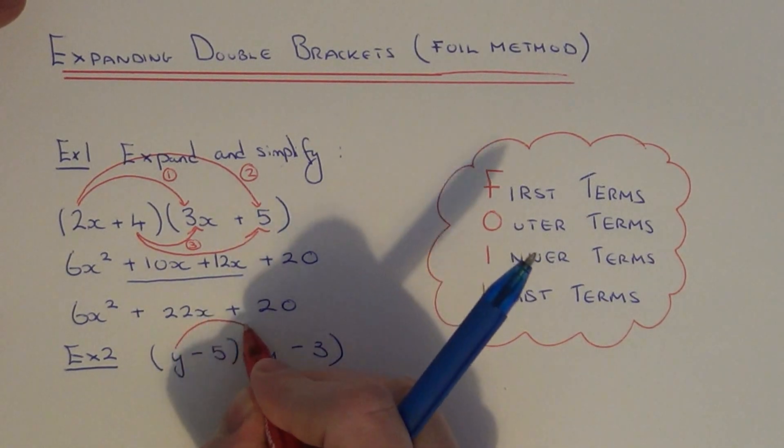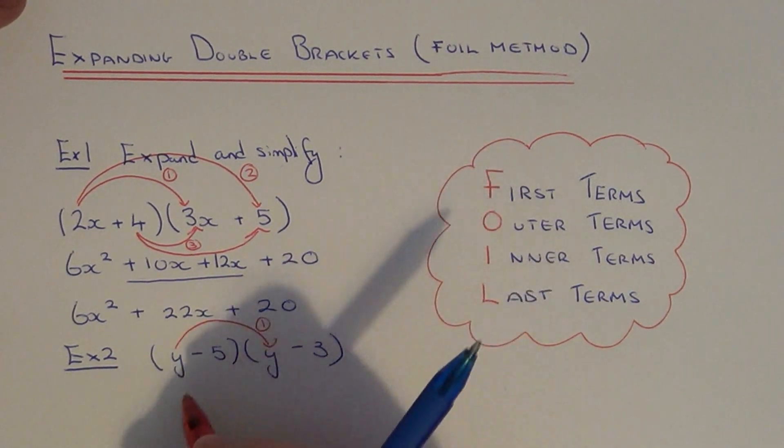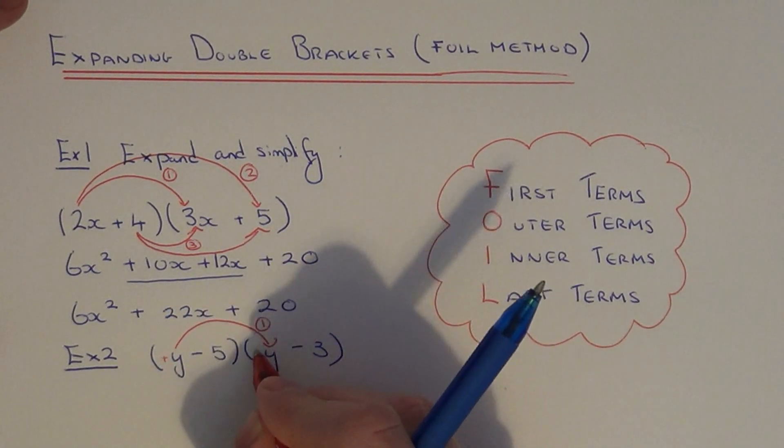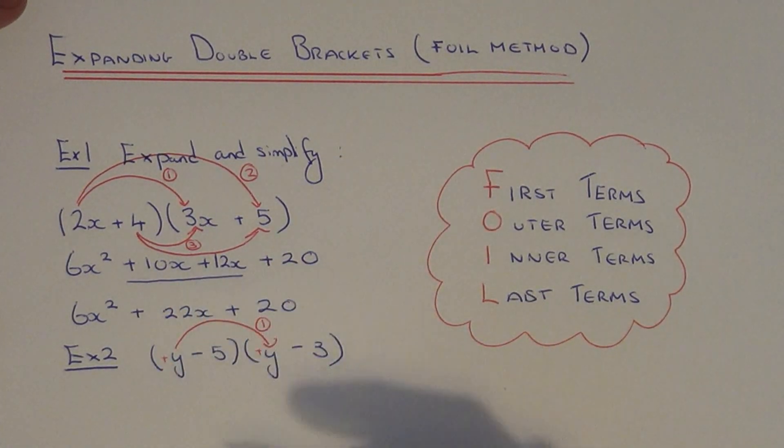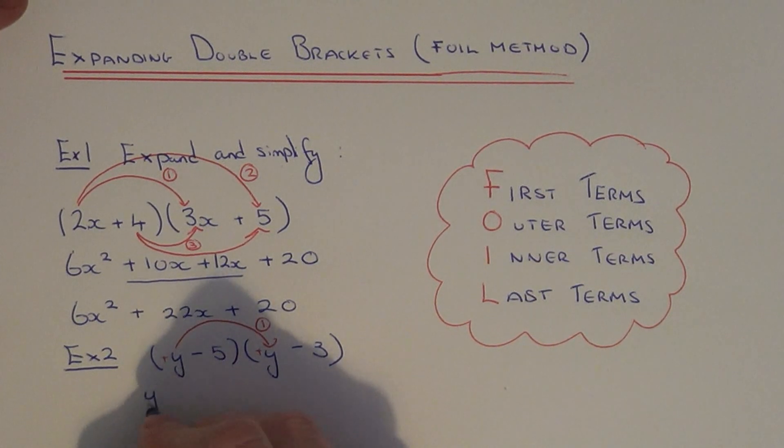So let's multiply the first terms together. So here we've got y times y. These are both positive here. So y times y gives us y squared.